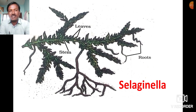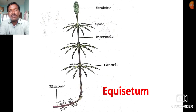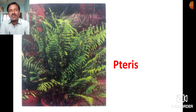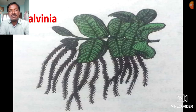Example plants shown include Selaginella, Equisetum, Pteris, and Salvinia.